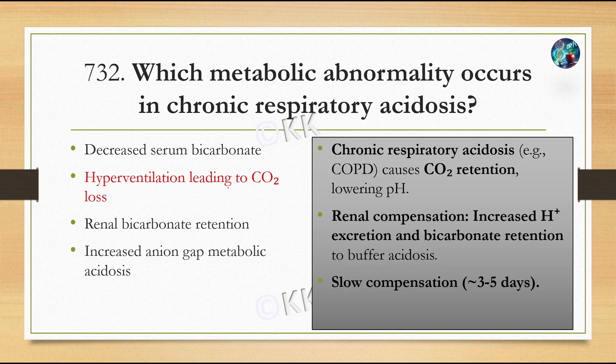Chronic respiratory acidosis causes CO2 retention, lowering the pH. Renal compensation increases hydrogen ion excretion and bicarbonate retention to buffer the acidosis. This compensation is actually slow and may require 2 to 5 days.